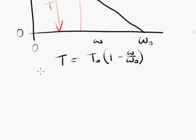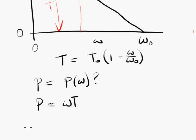So I would like to find out an equation for power as a function of angular velocity omega, so that I can then plot a graph of power as a function of omega. We know that P equals omega T, always, for any rotating machine.